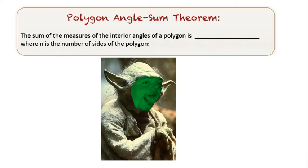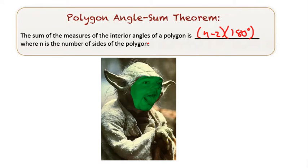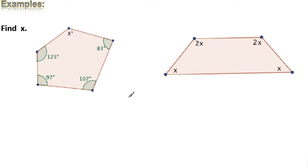So here we go — the Polygon Angle Sum Theorem. The sum of the measures of the interior angles of a polygon is (N-2) times 180. I'm using extra parentheses. Remember, it's okay to have extra parentheses — sometimes it's not okay not to have enough parentheses. N is the number of sides in the polygon. Subtract two from it, multiply by 180, and that tells you how many degrees are on the inside of the polygon.